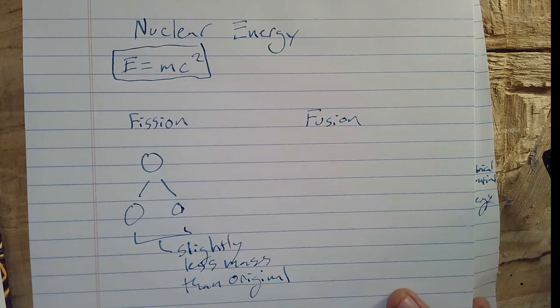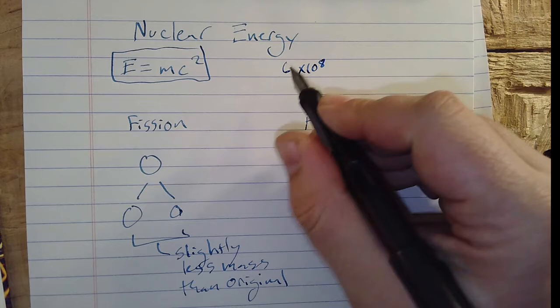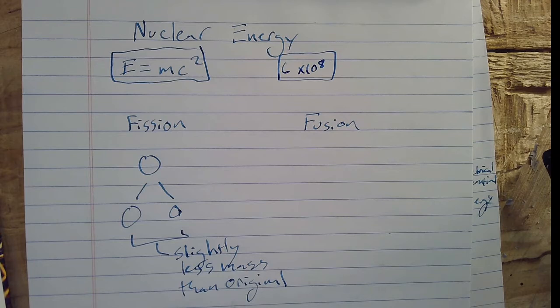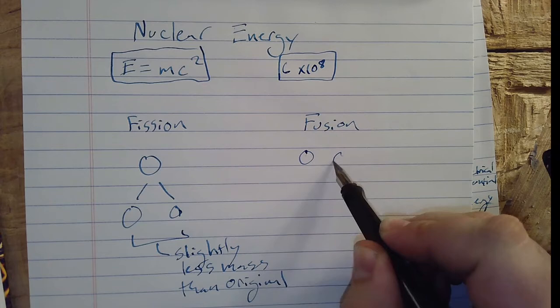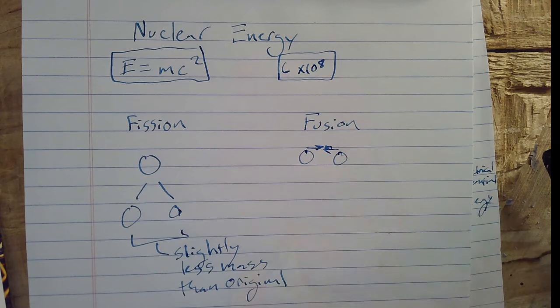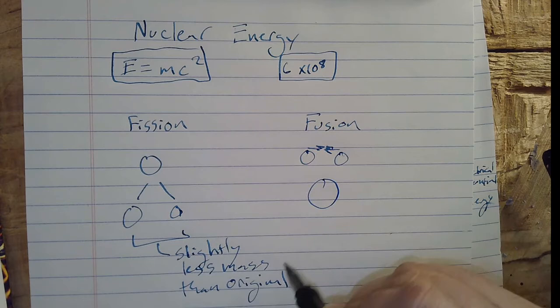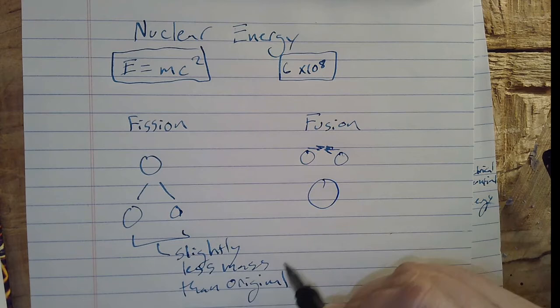Fusion doesn't really happen on the earth. So fusion, we have two atoms moving super, super, super fast. As they're moving fast, they combine into a single one that also has slightly less mass than the original. Now, how this works is gone through in more detail in your textbook. That said, that's it for our video for today.